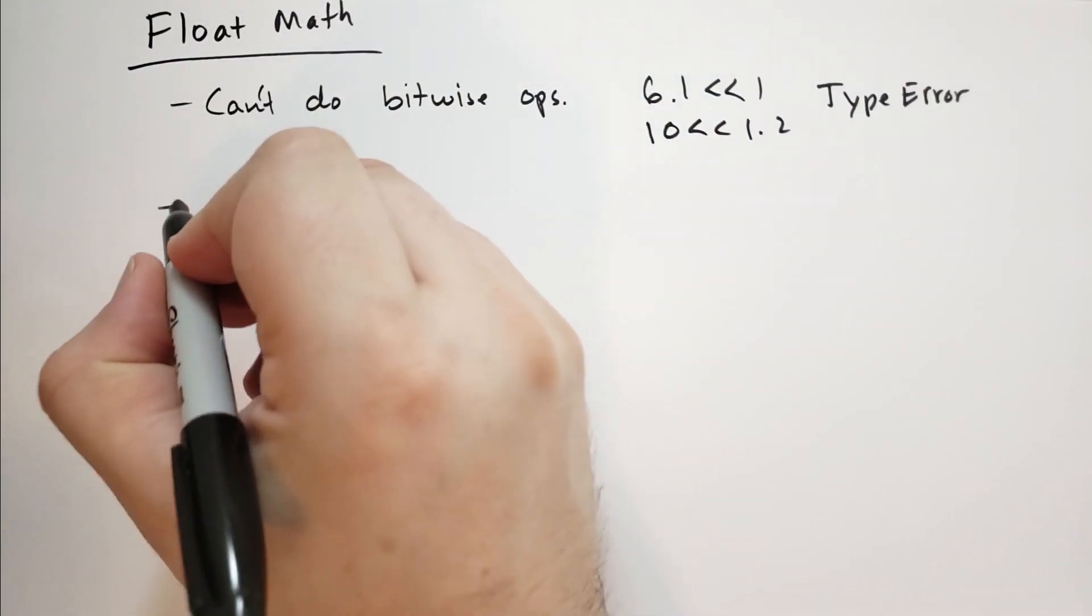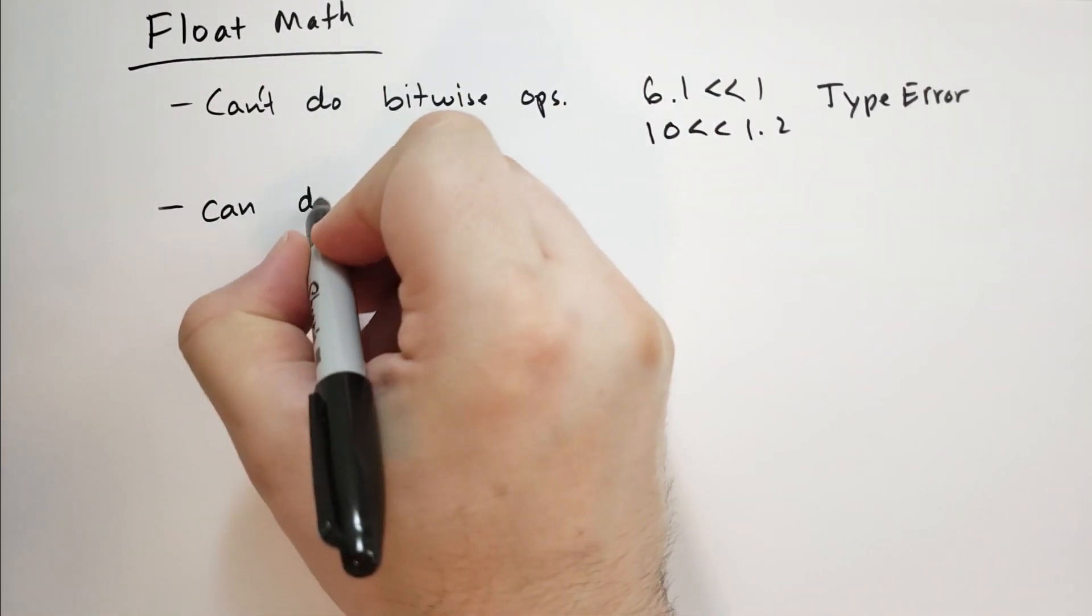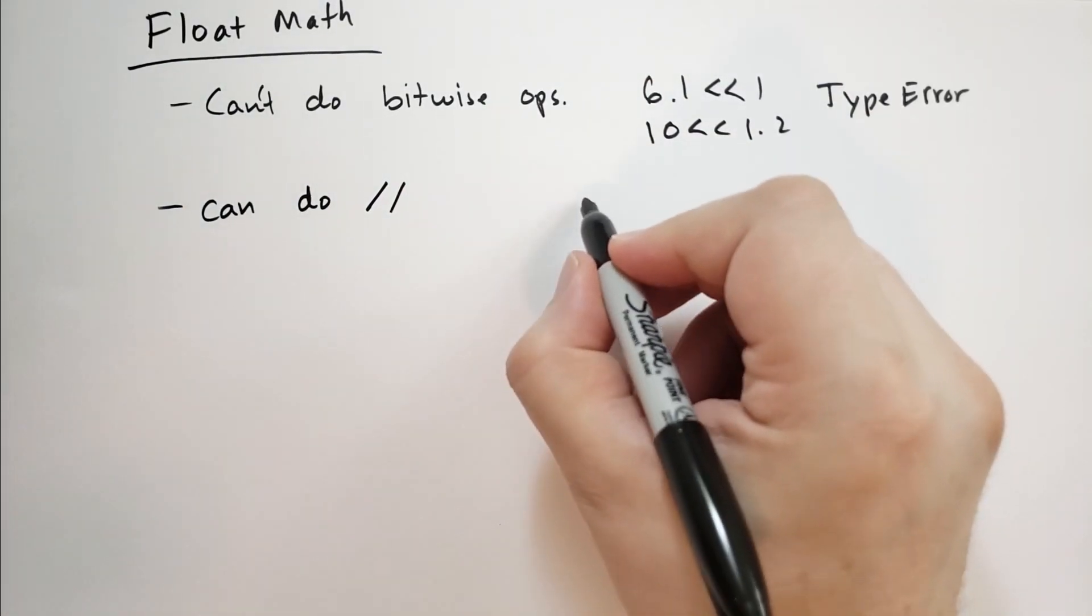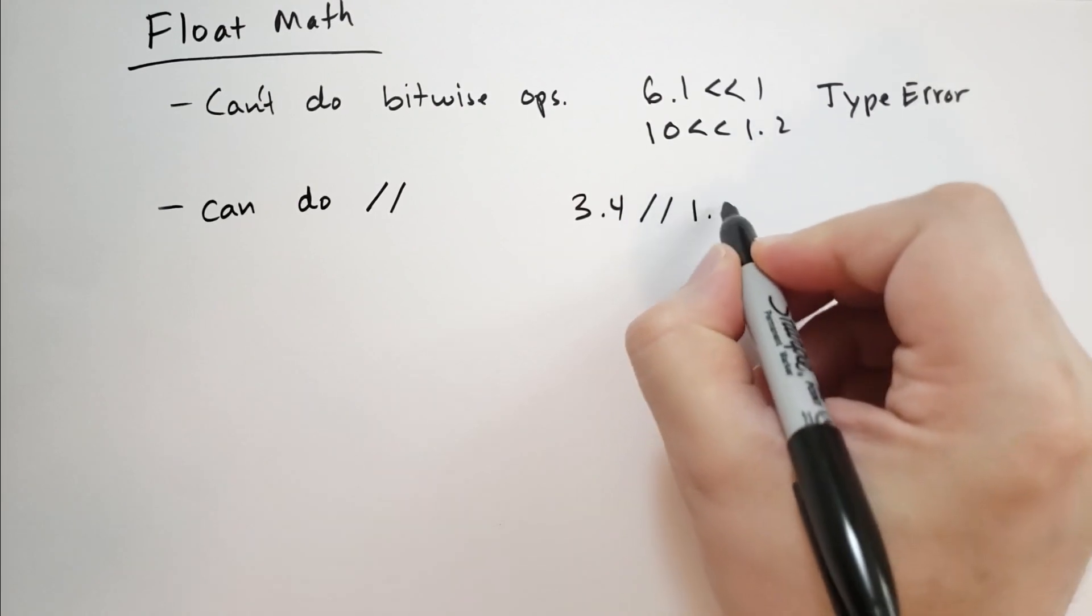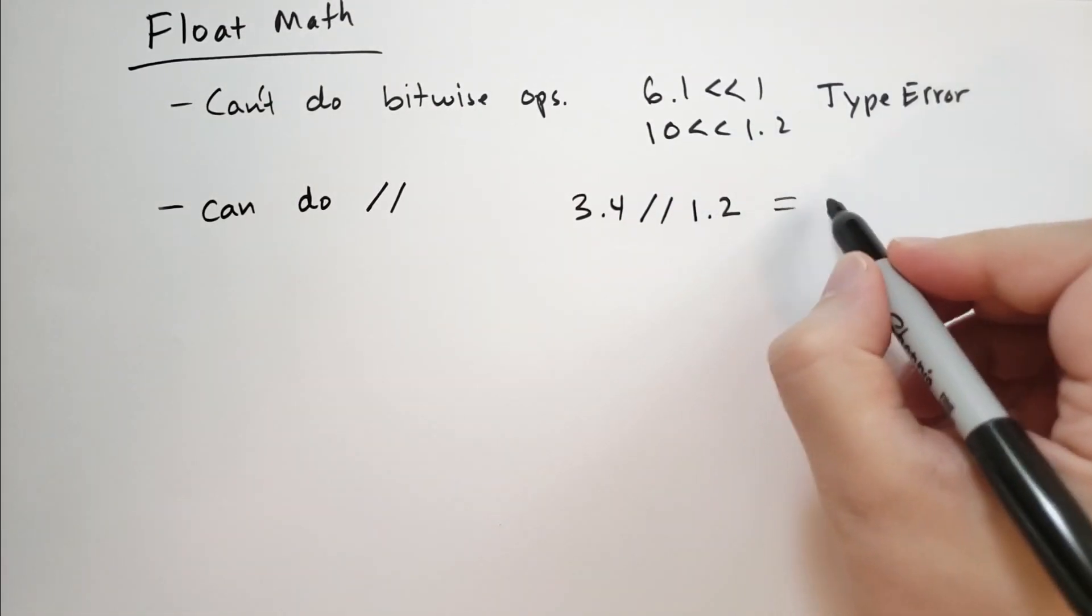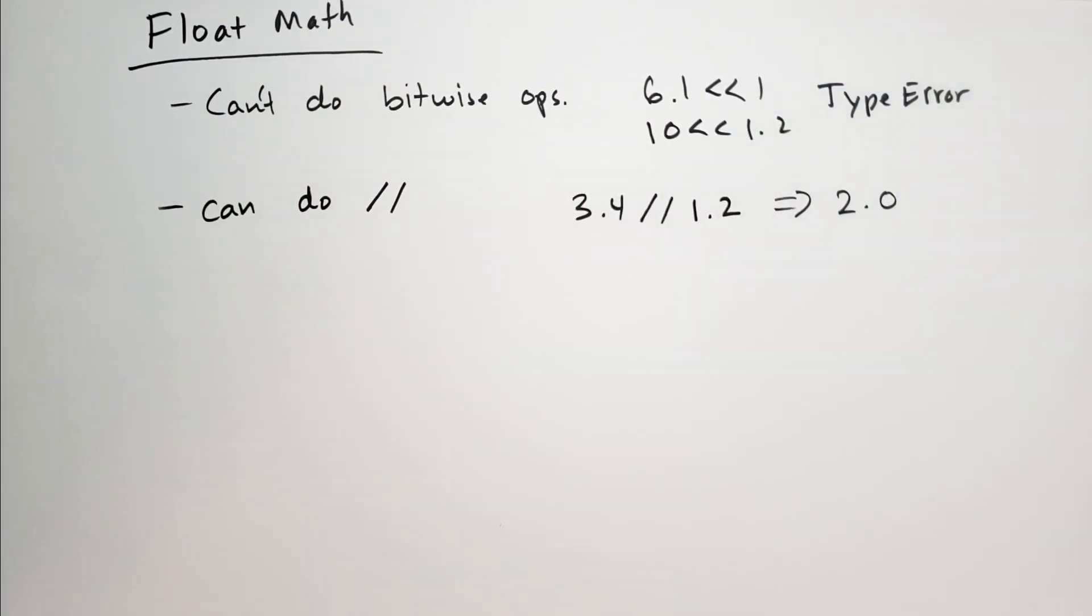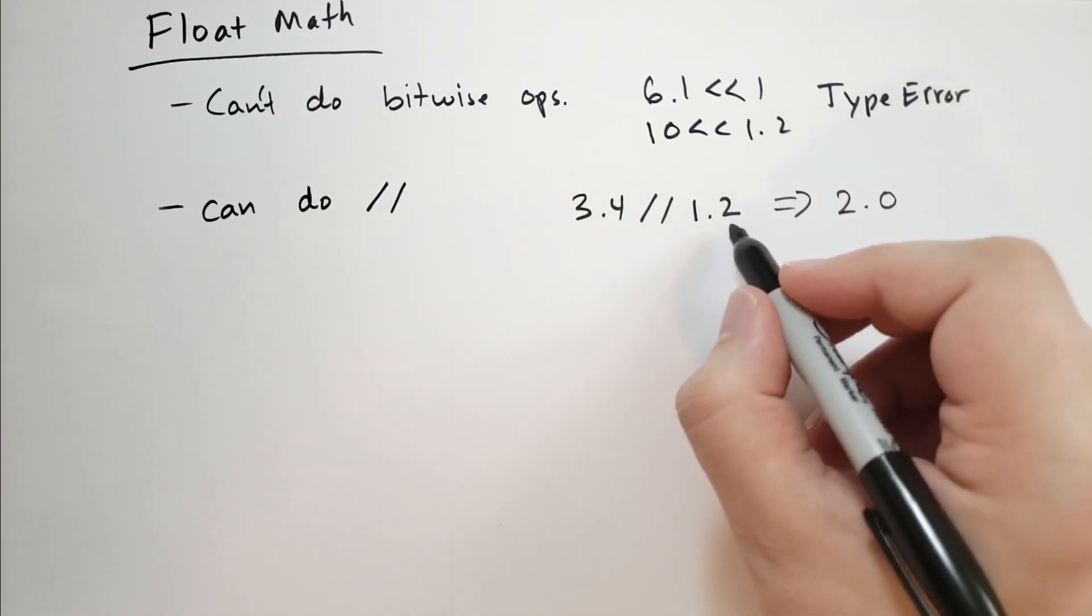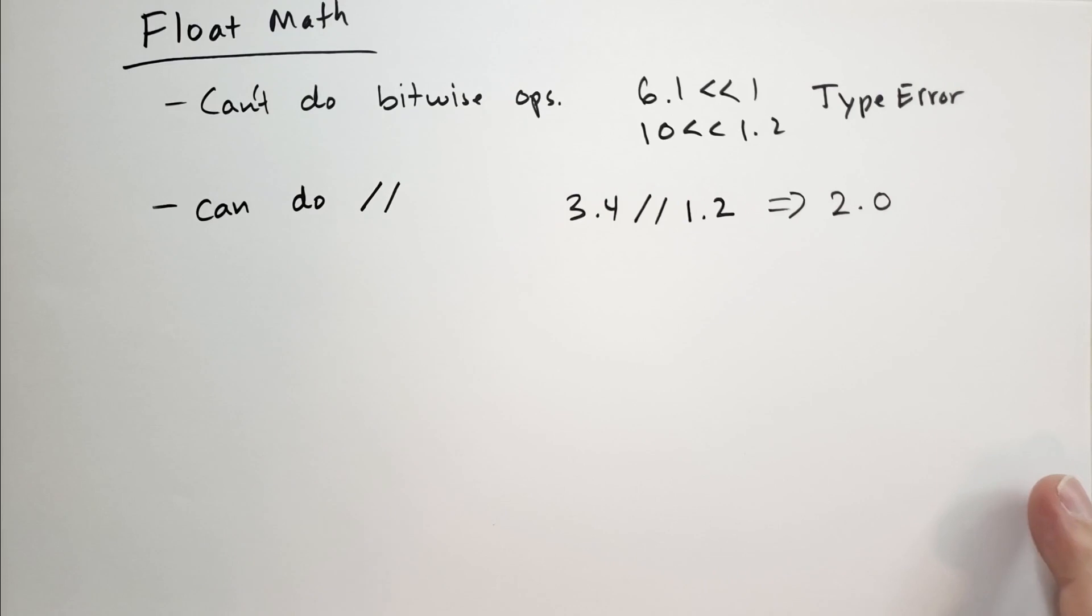You can do the floor division. So an example I have here is 3.4 floor division 1.2. That's going to give you 2.0. Because the closest you can get to 3.4 is 2 times 1.2. If you do 3 times 1.2, that's 3.6 and that's too big.